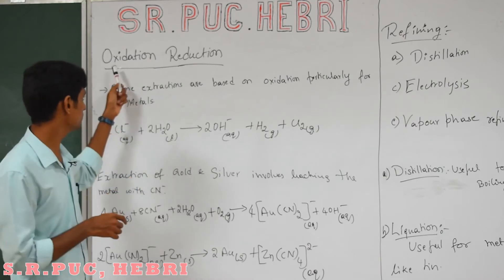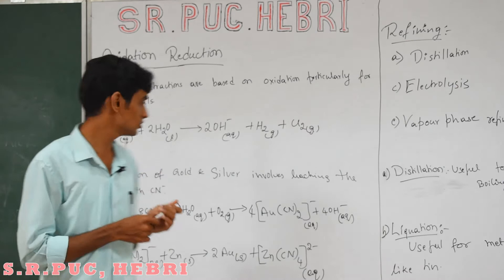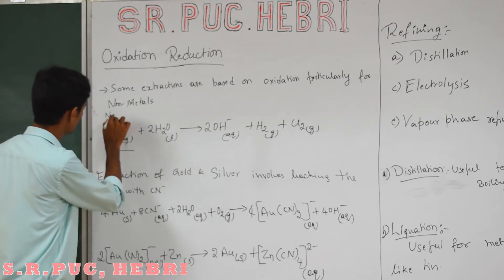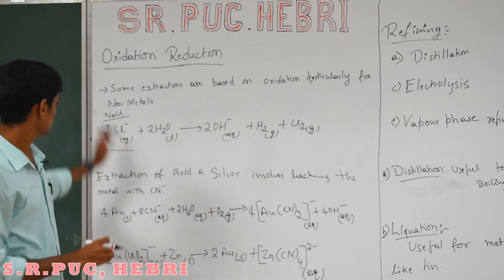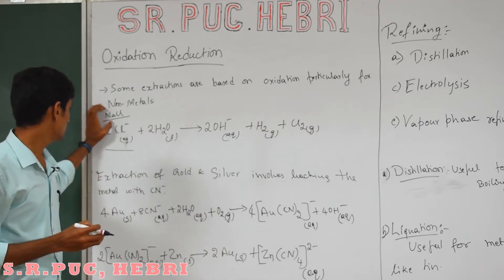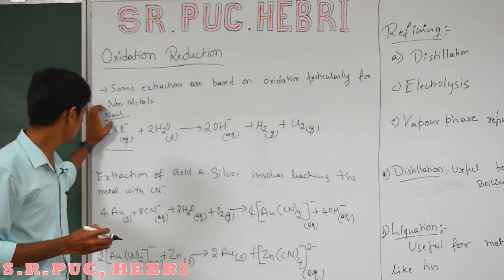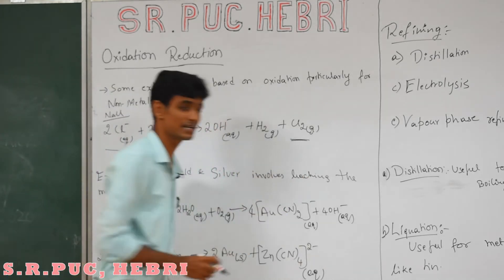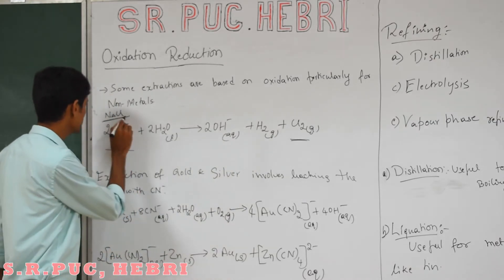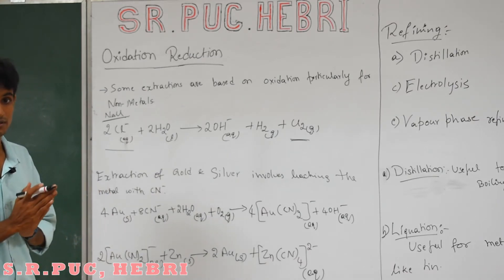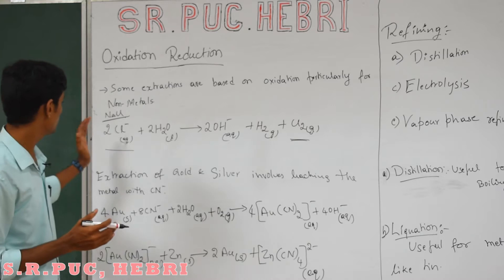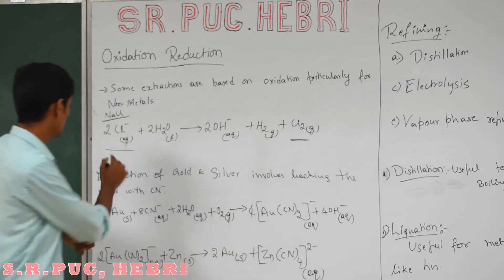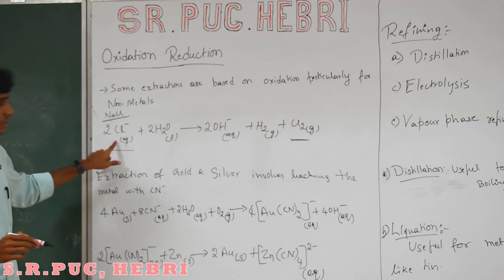Extraction using the oxidation method is mainly for non-metals. Here I will consider chlorine. We start with NaCl - brine solution - which is nothing but a solution of NaCl in water. From this brine solution we have to extract chlorine. This extraction can be done by oxidation, that is, in electrolysis we are going to convert NaCl into Cl₂ and NaOH.